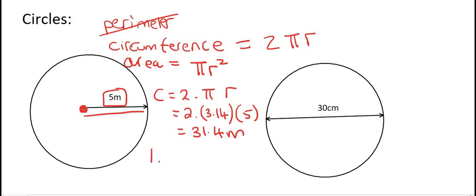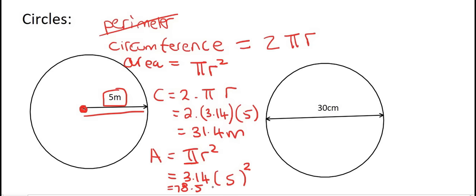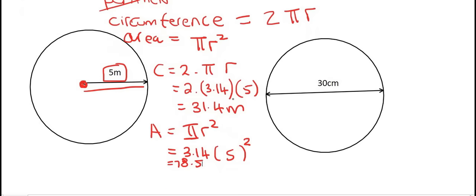Now the area is pi radius squared, so that's going to be 3.14. If your teacher tells you to write pi, your calculator can enter pi for you. The radius is 5, to the power of 2. If you type this on your calculator you get 78.5. Remember that when you're doing area, you always have to end with meters squared.